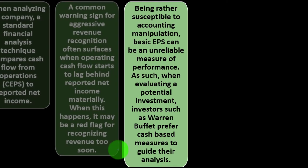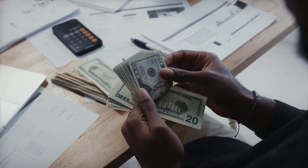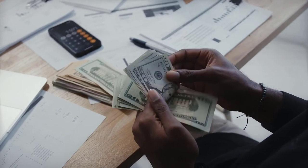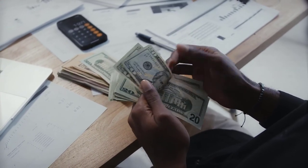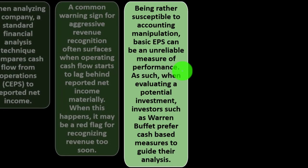When this happens, it may be a red flag for recognizing revenue too soon. Being susceptible to accounting manipulation, basic Earnings Per Share can be an unreliable measure of performance. Hopefully audits and accrual-method rules ensure financial statements represent revenue fairly, but companies could still try to manipulate the timing of revenue recognition — for example, to window-dress results and make revenue appear higher than it otherwise would be.